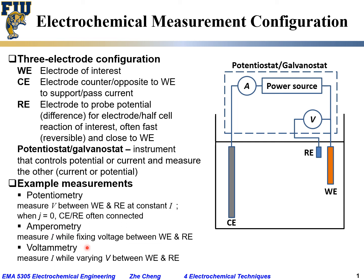You can do linear sweep voltammetry, or cyclic voltammetry where you increase the potential and then decrease it back and increase again. Finally, for EIS — electrochemical impedance spectroscopy — you measure impedance, usually at different frequencies, typically between the working electrode and the reference electrode. Sometimes when you do this you short the working electrode and the counter electrode together.